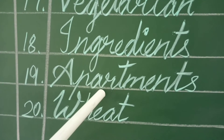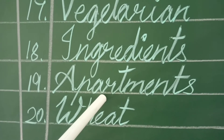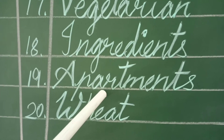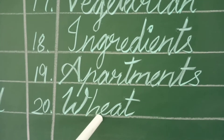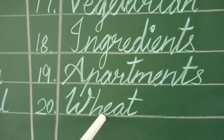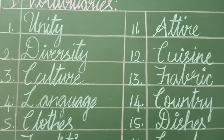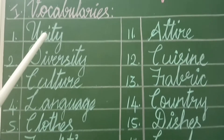Apartments — it means a flat. Adukku maadi kudi iruppu. Wheat — it is a cereal. Let's recall the vocabularies.